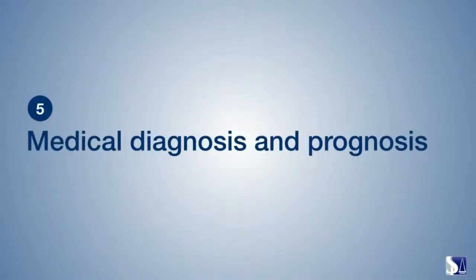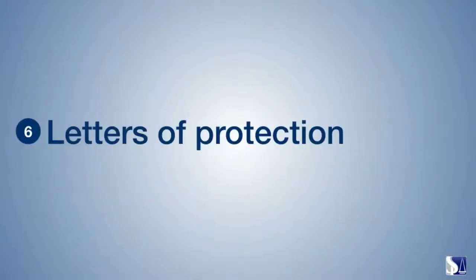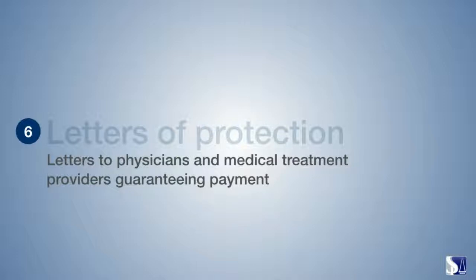In section five, your medical diagnosis and prognosis. This is where you'll put the original medical diagnosis and prognosis for your injury as written by your doctor, including estimated cost of future treatment. Section six, letters of protection: letters to physicians and medical treatment providers guaranteeing payment.